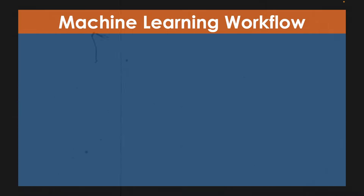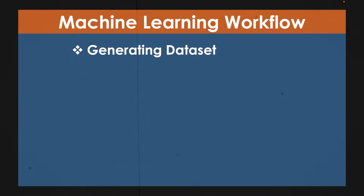Before we start coding, let me give you a brief outlook of what you would be expecting from this series of videos. The first step would be generating a dataset. The dataset I am using is the Delaney solubility dataset, which has SMILES strings and measured log solubilities. In order to predict solubilities, we need descriptors. So I'm going to use the modred library in Python for generating various 2D and 3D descriptors.